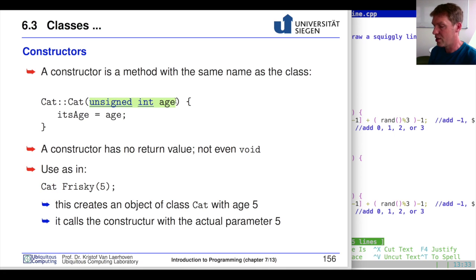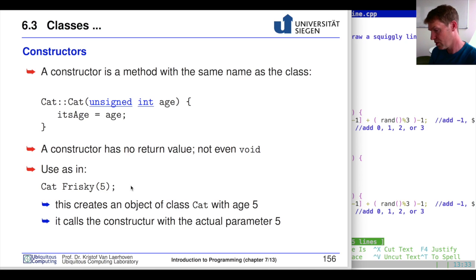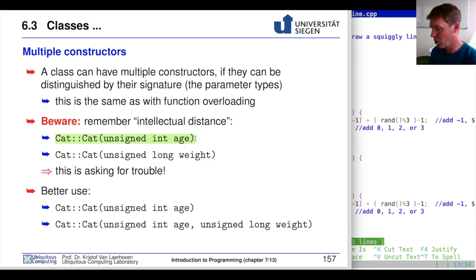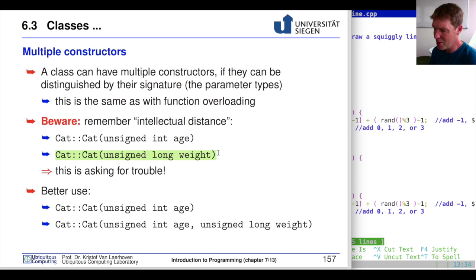The constructor initializes all the required data. In this case the constructor takes the age, so Frisky is five years old — we create a new instance of type cat called Frisky and Frisky is five years old. That is the main purpose of constructors. You can have multiple constructors, as we just saw. They must differ in the number or type of parameters. For example, one constructor takes an unsigned integer for age, another takes an unsigned long integer for weight.